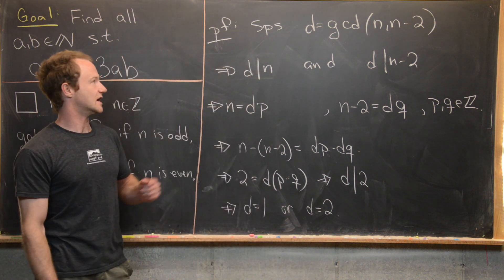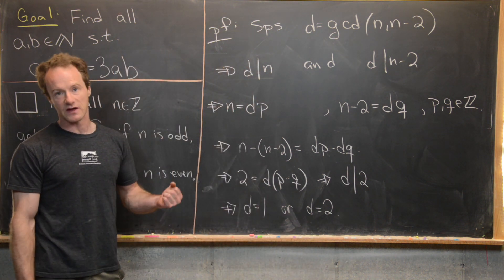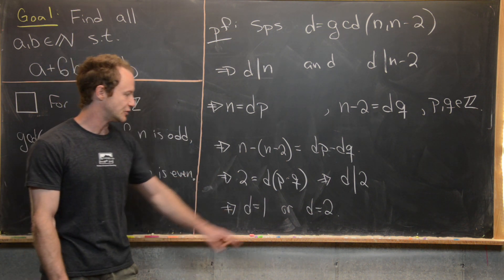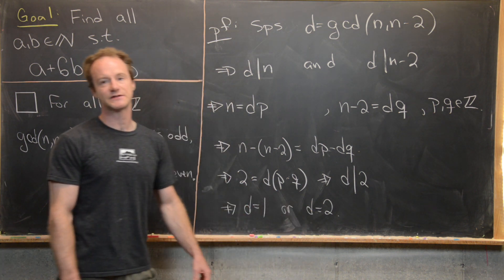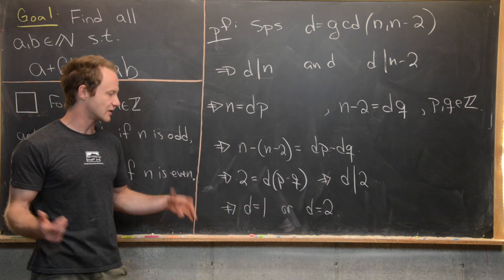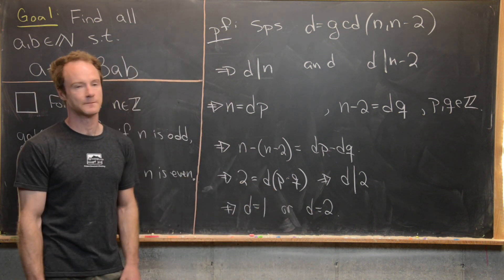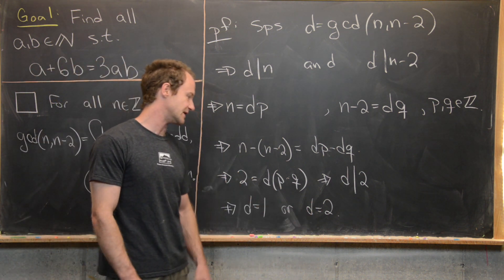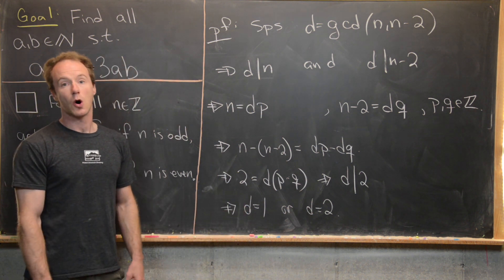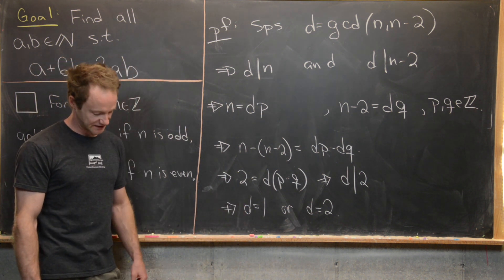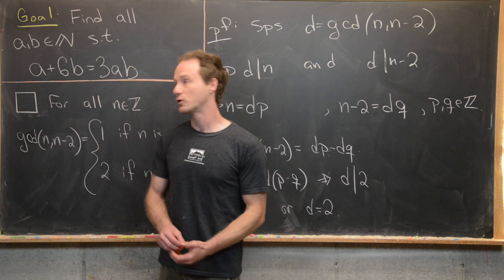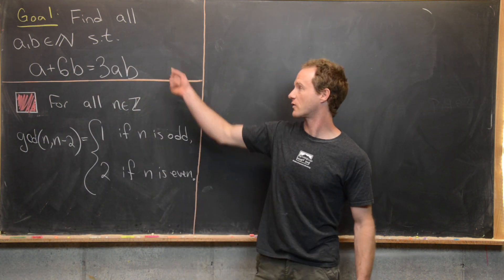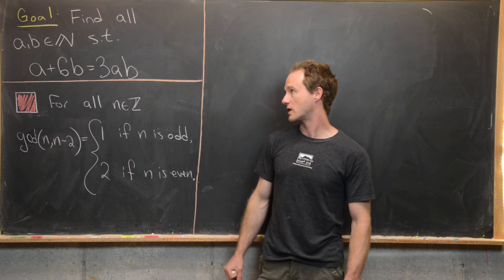Now we're essentially done. If n is even, then n minus 2 is even, so they're automatically both divisible by 2, and they can't be divisible by anything bigger than 2 because of what we've shown. And if n is odd, then n minus 2 is odd, so they cannot be divisible by 2, which means they're only divisible by 1, making 1 their GCD. So we've proved this tool and now we're going to move on to our main objective: solving this equation among the natural numbers.